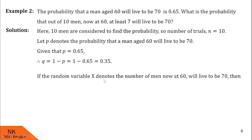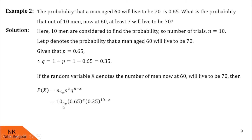We denote x as the random variable representing the number of men now at 60 who live to be 70. Then P(X=x) is given by nCx into p raised to x into q raised to n minus x, because x follows binomial distribution. Here p = 0.65, q = 0.35, and n = 10. So P(X=x) becomes 10Cx * (0.65)^x * (0.35)^(10-x).